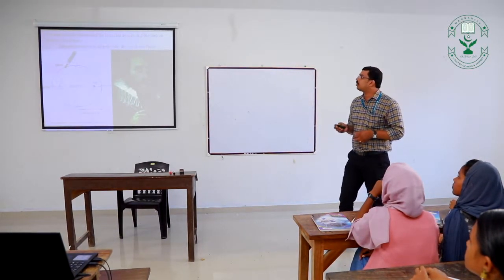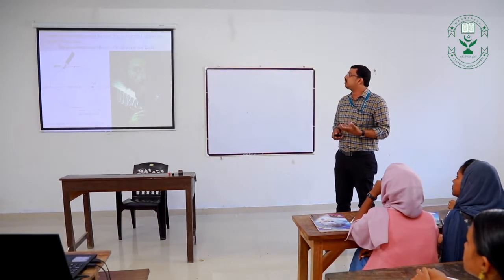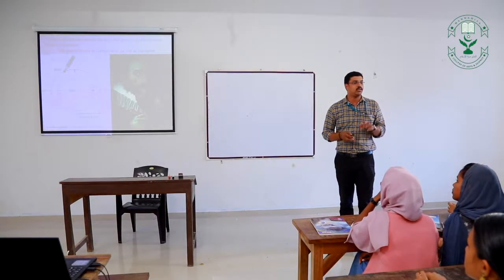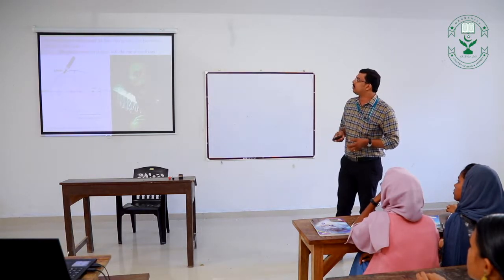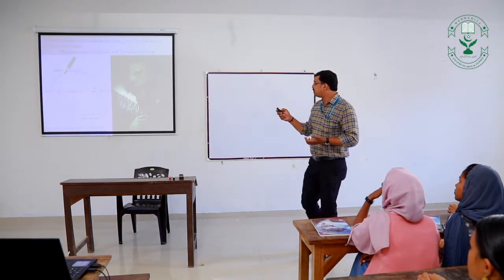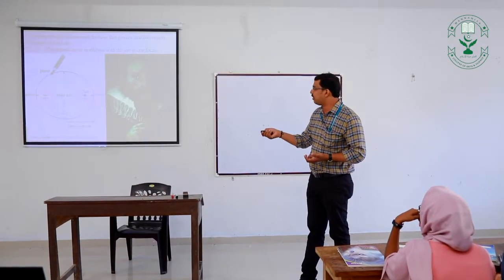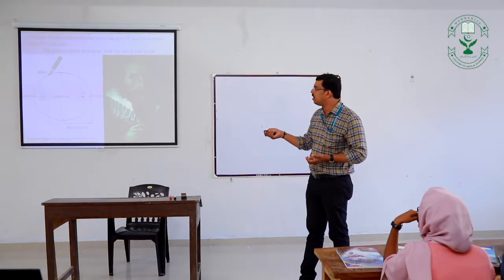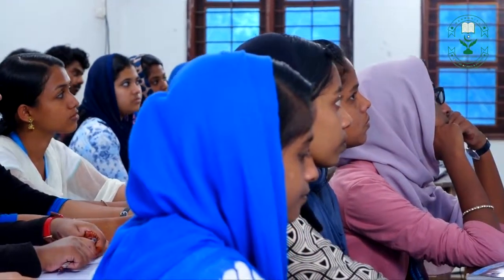Kepler's First Law, called the Law of Orbits, states that the planets move in an ellipse with the sun at one of its foci. An ellipse has a major axis and two foci — a first focus and a second focus. The sun is at one of the two foci, and planets move around the sun in an elliptical orbit.